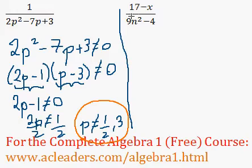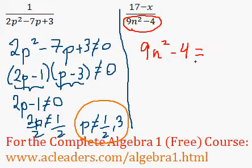What about over here? We know that 9n squared minus 4 cannot equal 0, and this is a difference of squares.